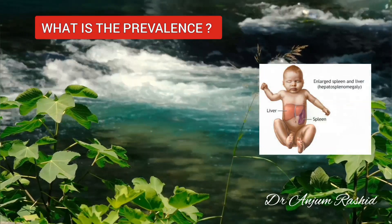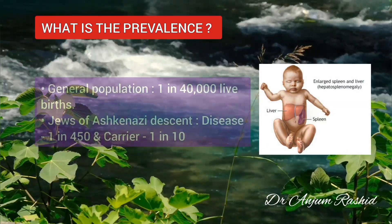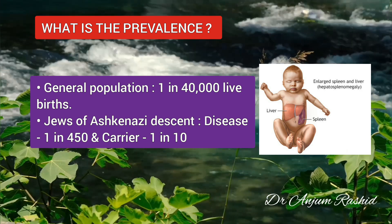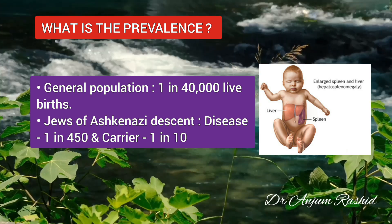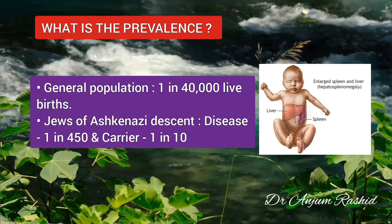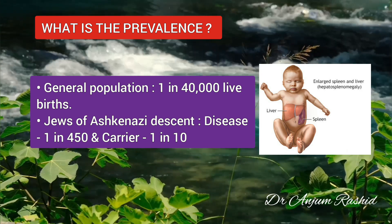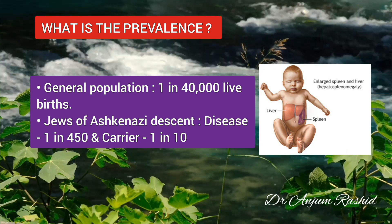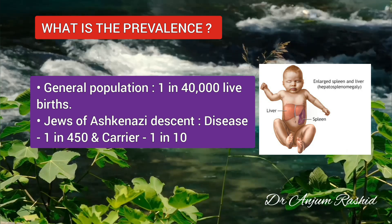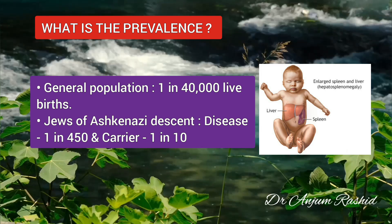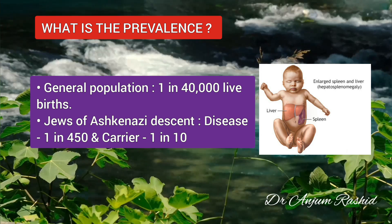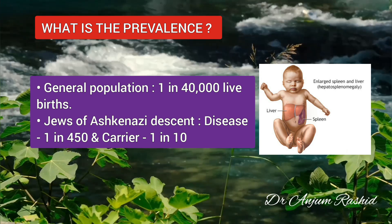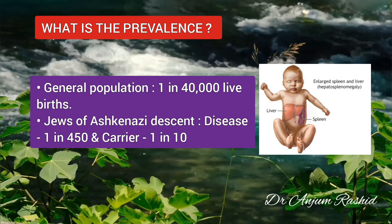Regarding the prevalence of Gaucher disease, it can affect anyone, occurring in up to 1 in 40,000 live births in the general population. It is more common among Jews of Ashkenazi descent, occurring in approximately 1 in 450 within this population. As many as 1 in 10 may carry the mutated gene responsible for Gaucher disease.